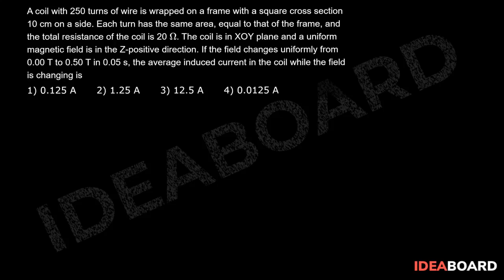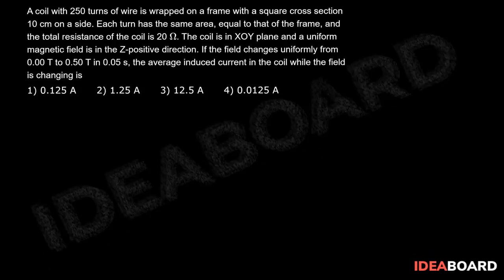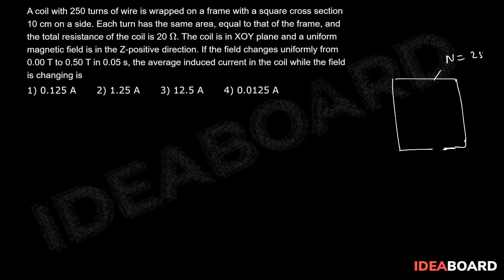So here we have a coil like this and we know that we have 250 turns. So N equals 250 and there is a resistance which is R equals 20 ohms.